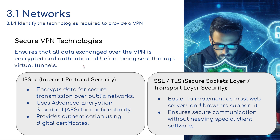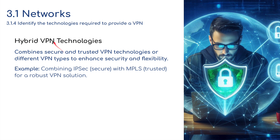There are two types of secure VPN technologies. First, IPsec — Internet Protocol Security — which ensures all data exchanged over the VPN is encrypted and authenticated before being sent through virtual tunnels. IPsec encrypts data for secure transmission over public networks, uses Advanced Encryption Standards (AES) for confidentiality, and provides authentication using digital certificates. Second, SSL and TLS — Secure Socket Layer and Transport Layer Security — those little padlocks or HTTPS in your browser. These are easy to implement as most web servers and browsers support them, ensuring secure communication without needing special client software.